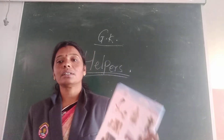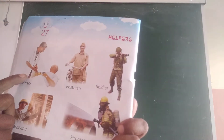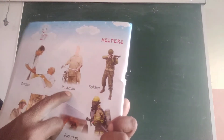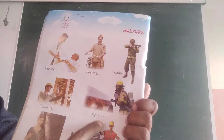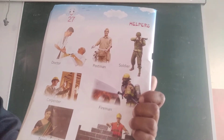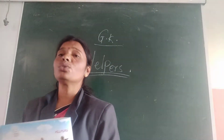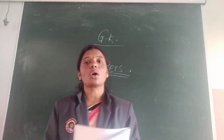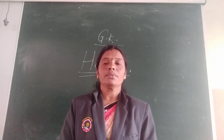Now see the pictures. First picture: doctor, postman, soldier, carpenter, fireman, mason, teacher. Like this you have to read all these pictures. Understood? Thank you.